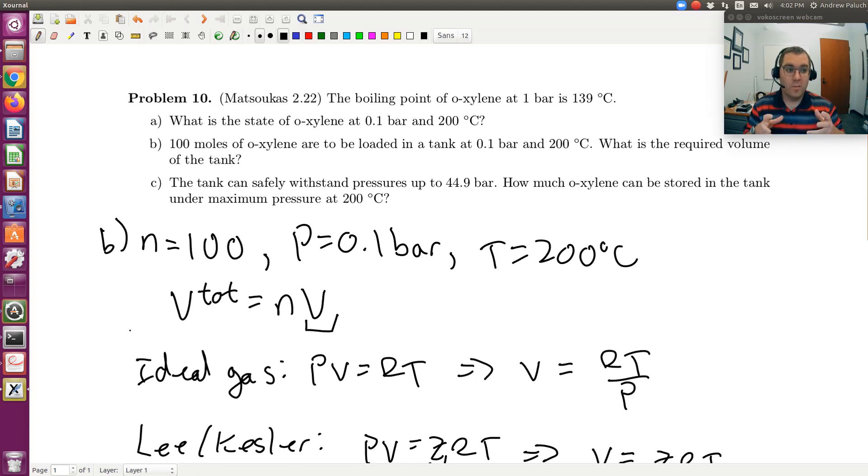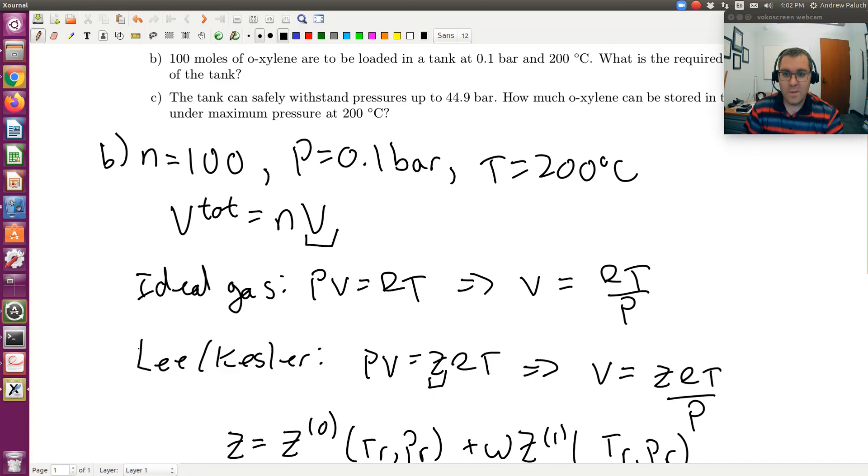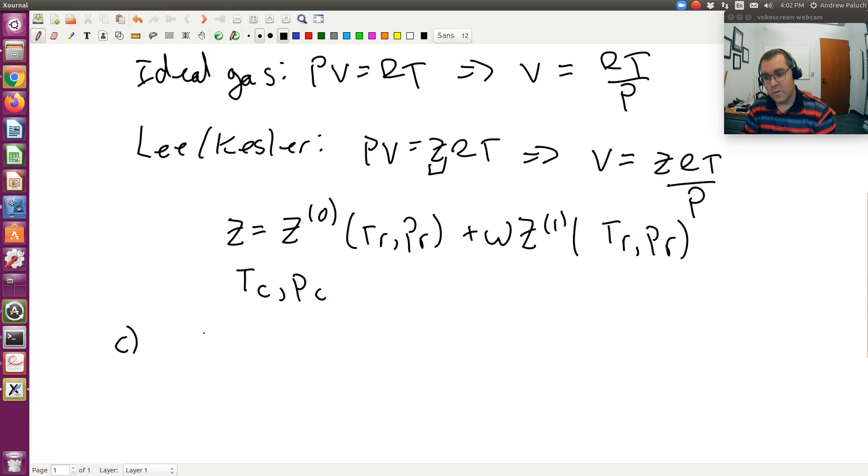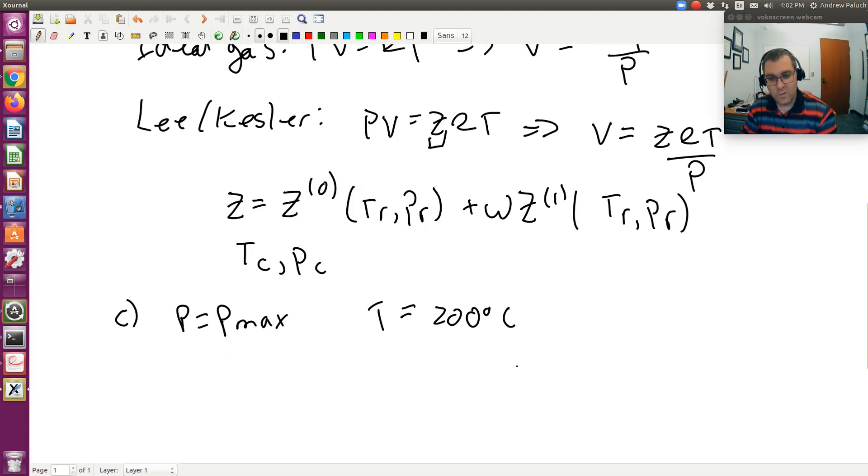I know the number of moles that I can hold is going to increase as pressure increases at constant temperature, and we can increase the pressure to P max. Basically how I would see this is just like B. Here now we're going to have our P that we're going to use is going to be our P max, and then T will be our 200 degrees C. We're going to go through the same exercise. We want to calculate V.